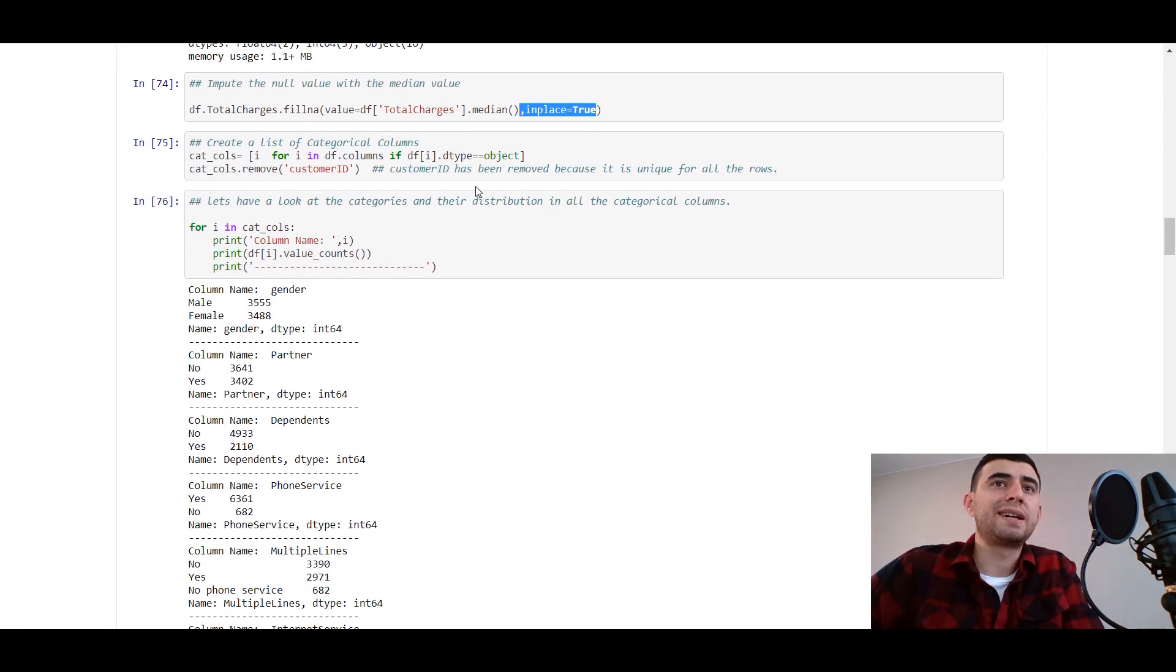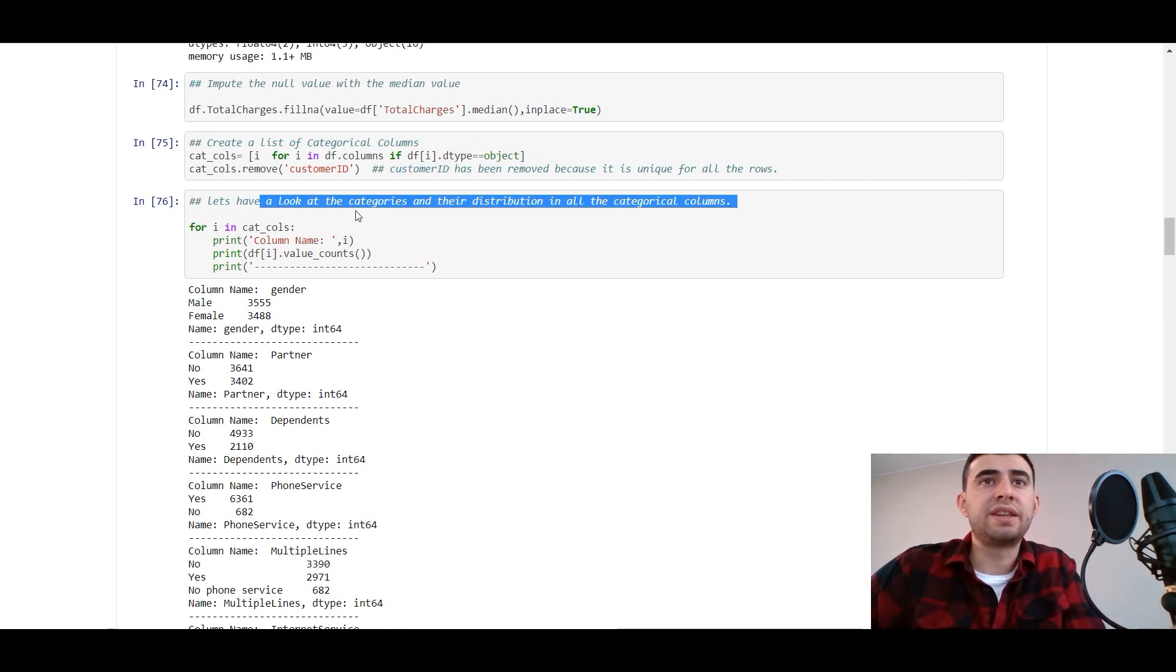After converting the column total charges to numeric, we can see the info on this dataframe. Input the null value with the median value, fillna value equals median, in place equals true. Create a list of categorical columns where the dtype is object.